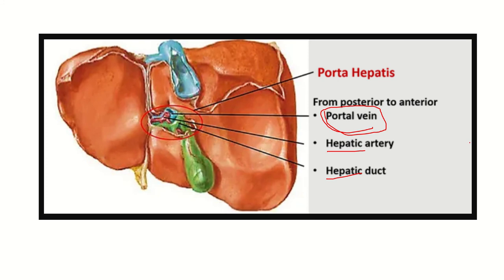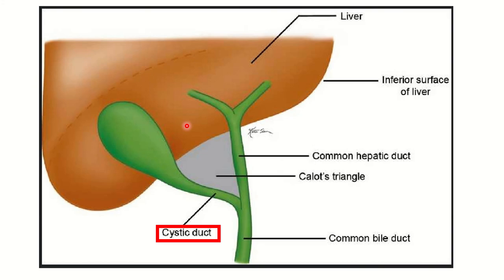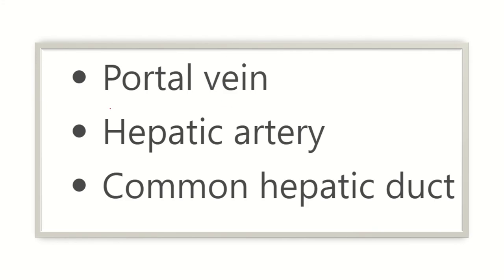In addition to portal vein, hepatic artery, and hepatic duct, nerve structures and lymph nodes also pass through the porta hepatis, making five structures in total. In this picture, we can see the cystic duct is far away from the hepatic duct — there is a right hepatic duct and a left hepatic duct — so the cystic duct lies outside the porta hepatis region.